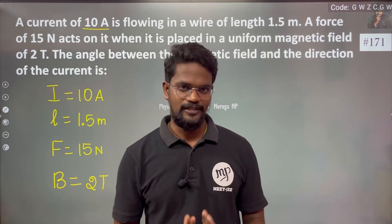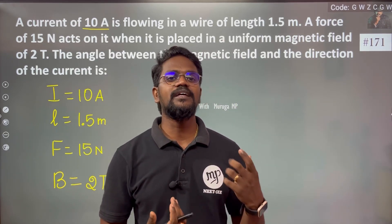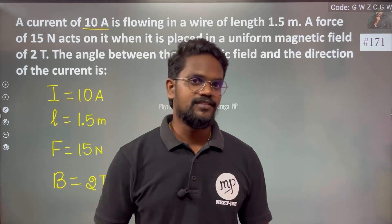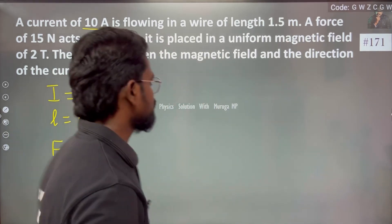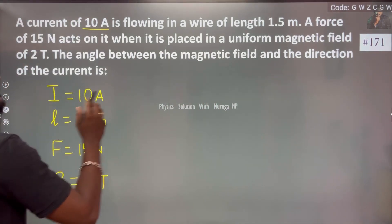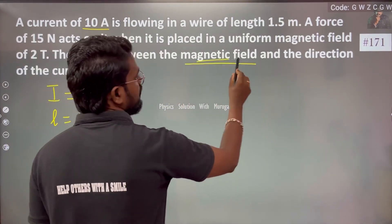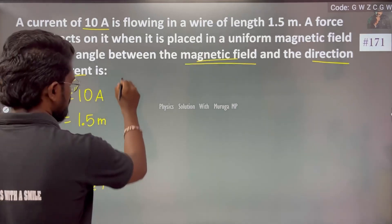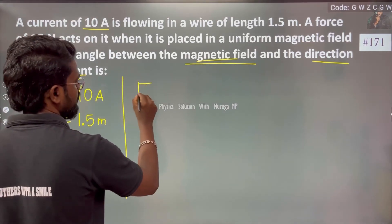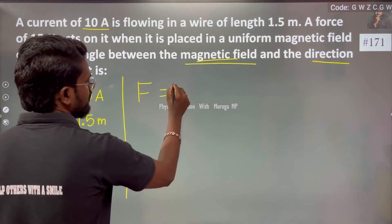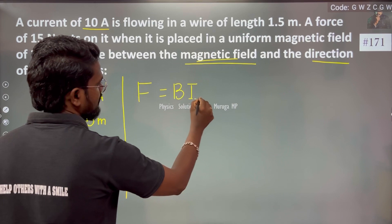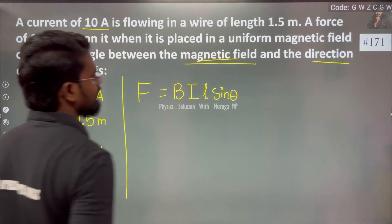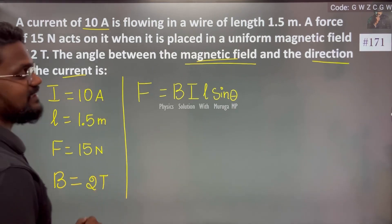The formula we use is F = B I L sin theta.